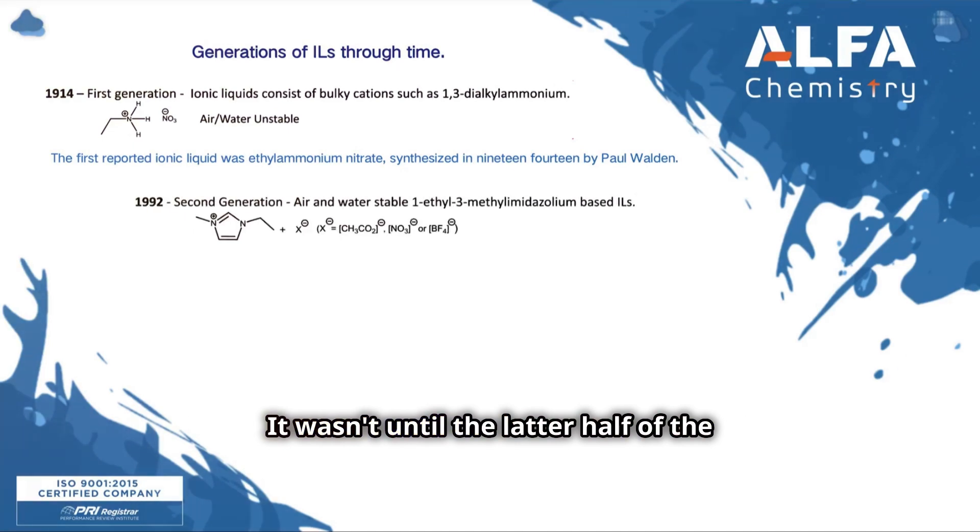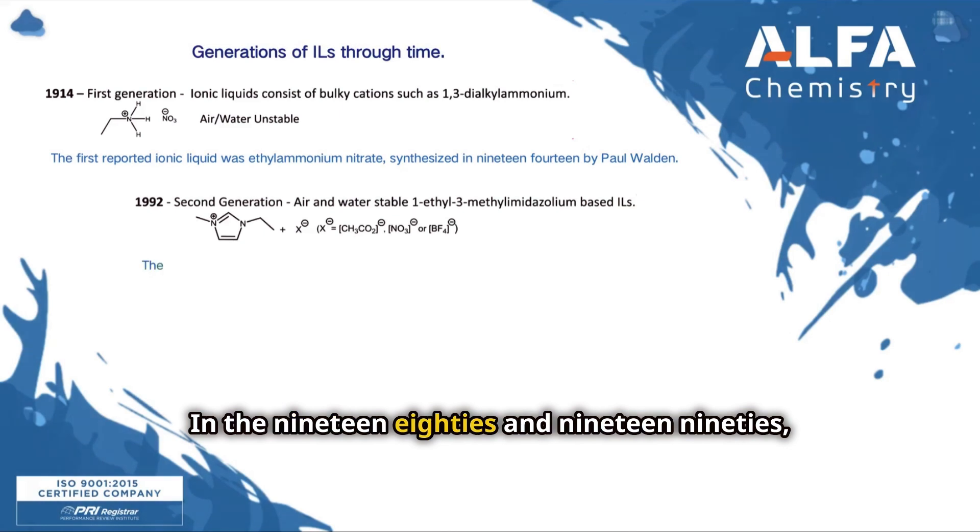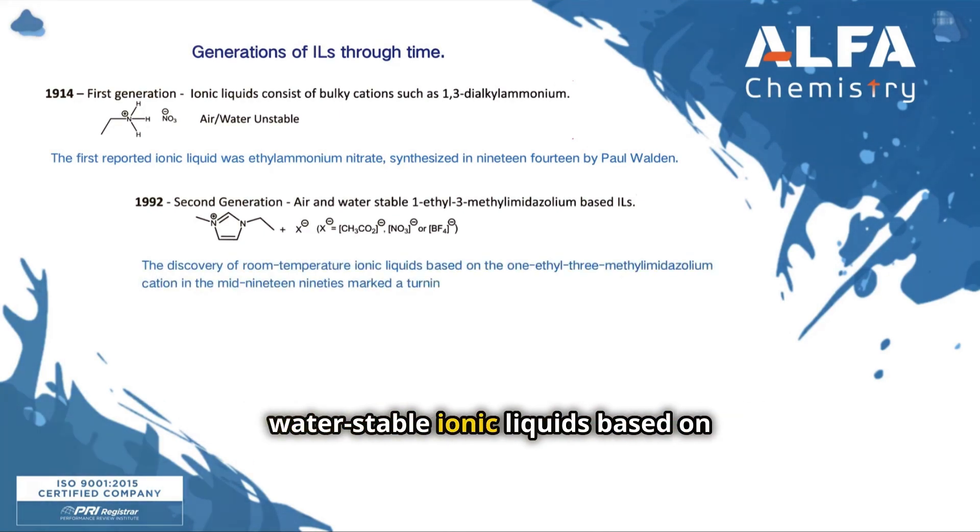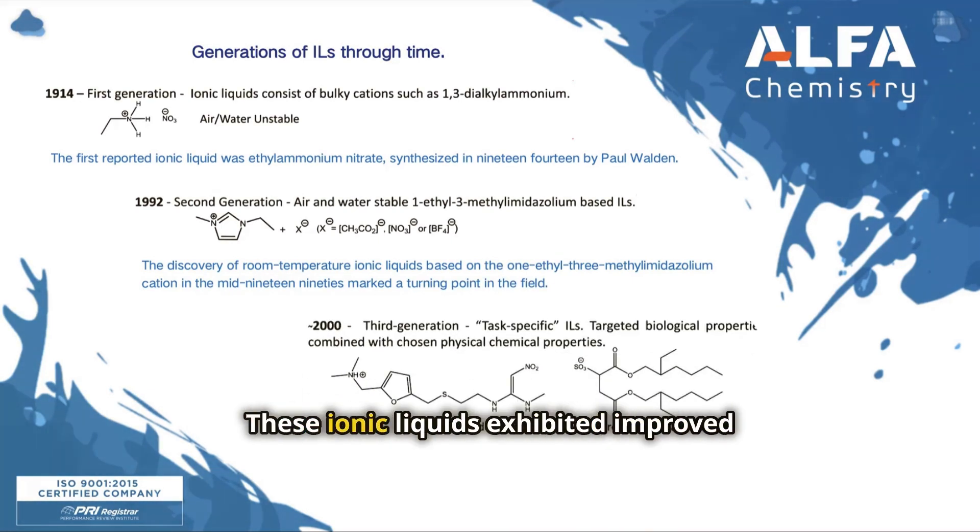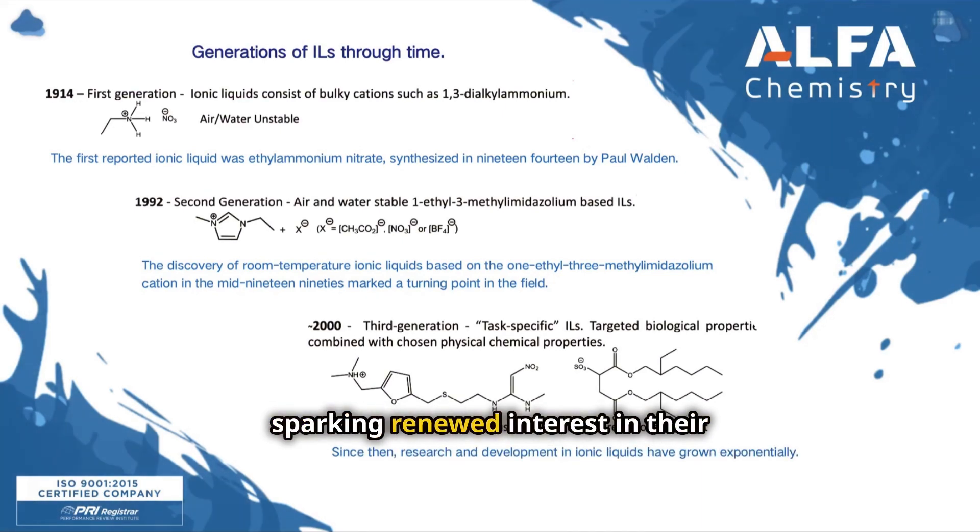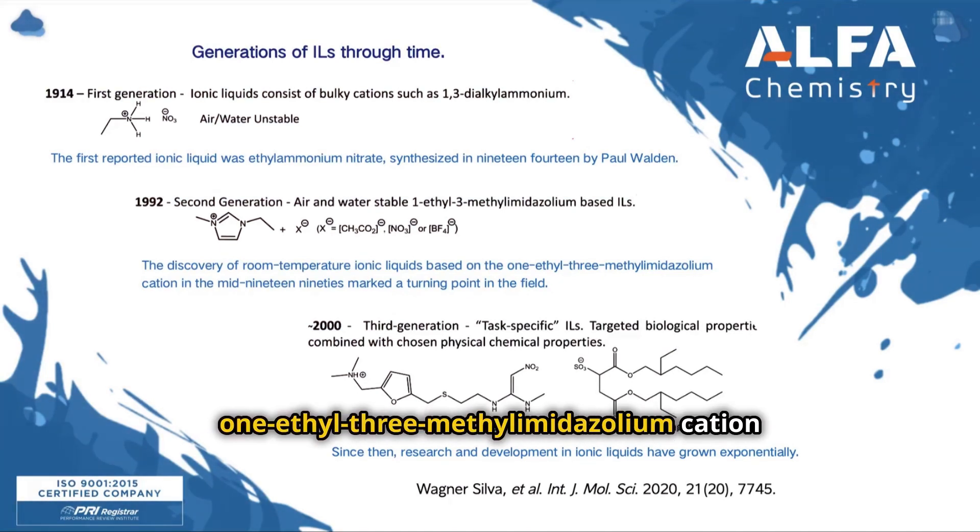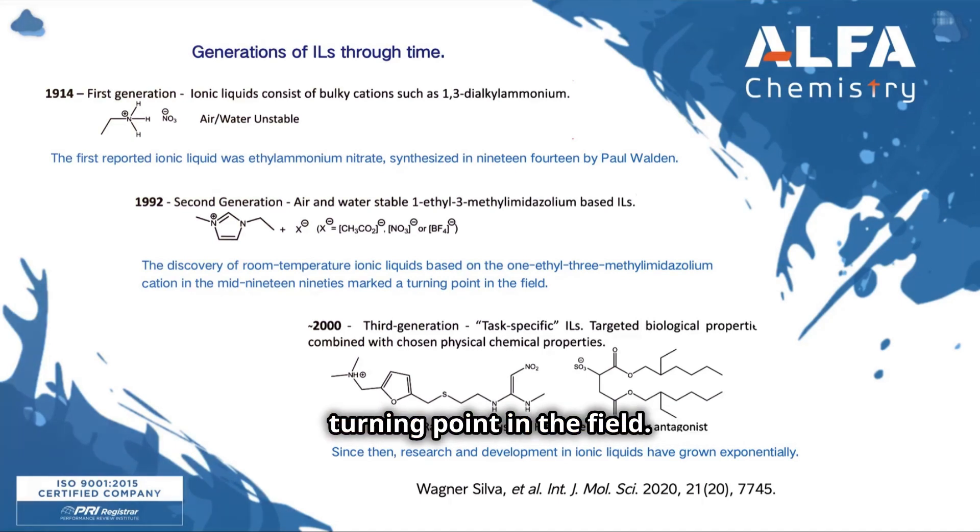It wasn't until the latter half of the 20th century that significant advancements in the field took place. In the 1980s and 1990s, researchers began to explore air and water stable ionic liquids based on imidazoleum and pyridinium cations. These ionic liquids exhibited improved stability and a wider range of properties, sparking renewed interest in their potential applications. The discovery of room temperature ionic liquids based on the 1-ethyl-3-methylimidazoleum cation in the mid-1990s marked a turning point in the field. Since then, research and development in ionic liquids have grown exponentially.